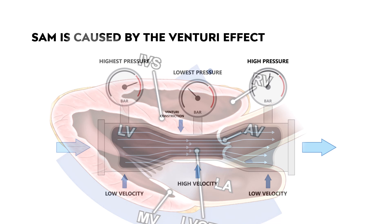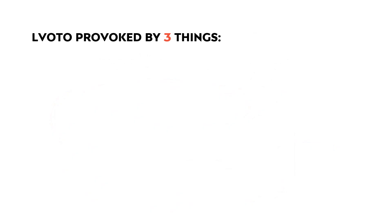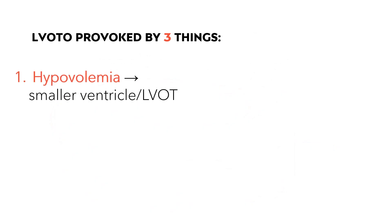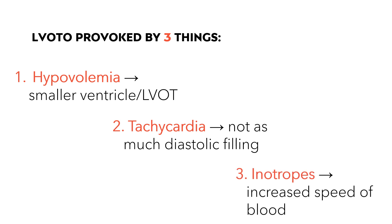LVOTO is most commonly provoked by three things. Number one: hypovolemia — a smaller ventricle and smaller LVOT causes higher velocity blood flow and more SAM. Number two: tachycardia — there's not as much diastolic filling of the left ventricle, leading to a smaller LVOT as well. And number three: inotropes — increased contractility and therefore increased speed of blood leads to more SAM.